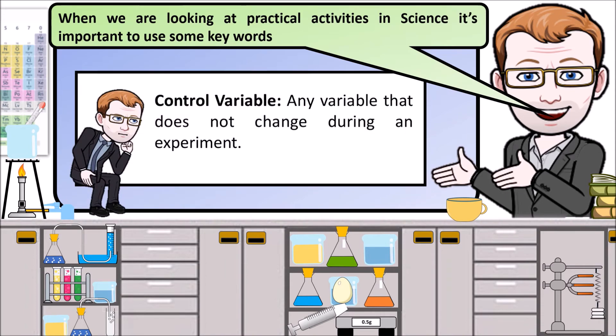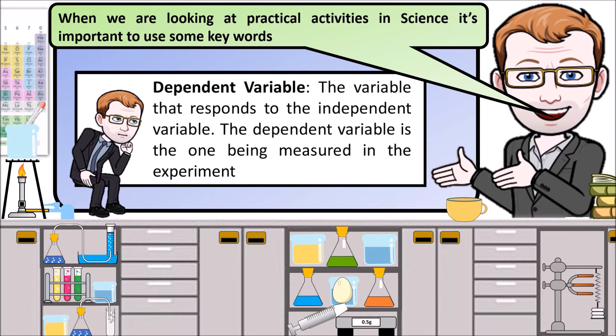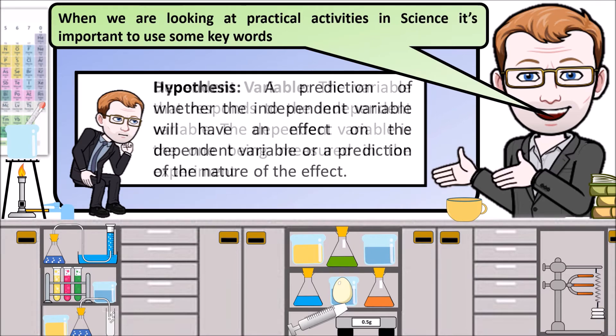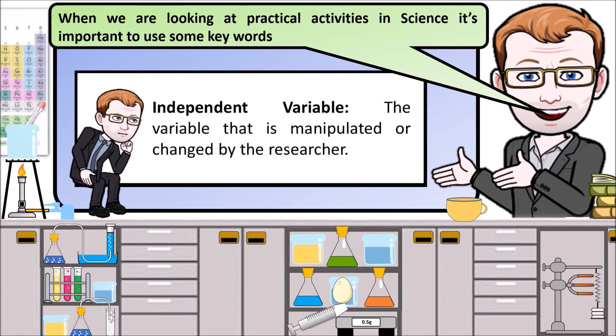A control variable is any variable which does not change during the experiment. The dependent variable is the variable that we're going to measure as a response to the independent variable. A hypothesis is a prediction on whether the independent variable will have an effect on the dependent variable. An independent variable is a variable that we are changing.